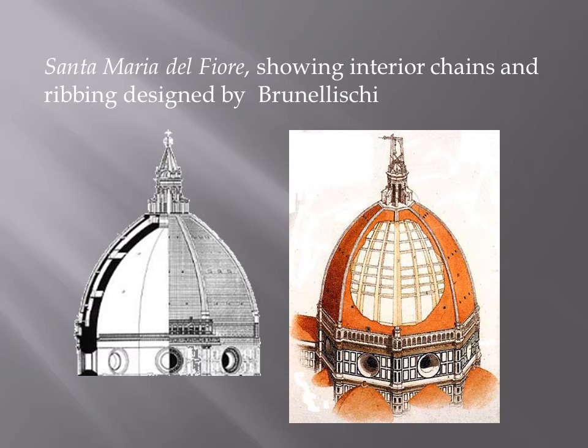Here are drawings of the dome of Santa Maria del Fiore showing the interior chains and ribbing designs. On the diagram on the right, the artist has taken away a section of the roof to show you the ribbing — it looks like the ribbing of a ship hull, supporting the weight of the bricks stacked on top. On the left, a cutaway view of the dome reveals small structures aligning with dots that form the chaining system, again keeping the dome from pushing outwards and collapsing.